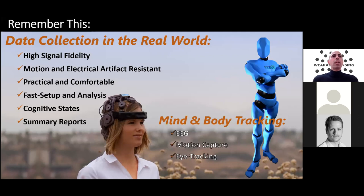To summarize what we covered today: you can collect high signal quality EEG, movement signals, and eye tracking that is easy, fast, and comfortable. With Captive, analysis is seamless — synchronization is handled by the software, and reports are flexible and fast. With Q-State software, machine learning algorithms provide cognitive insights from EEG and physiological features.